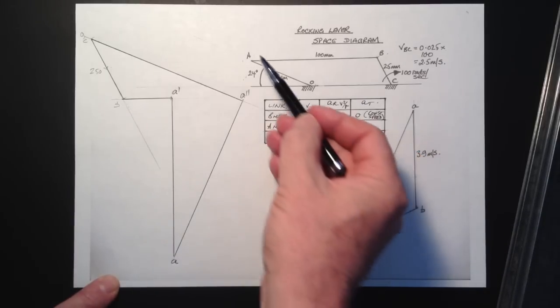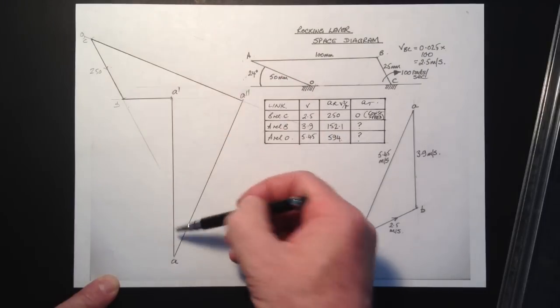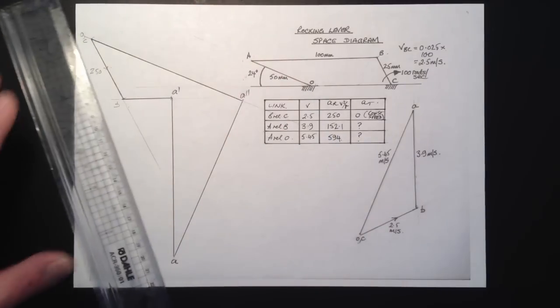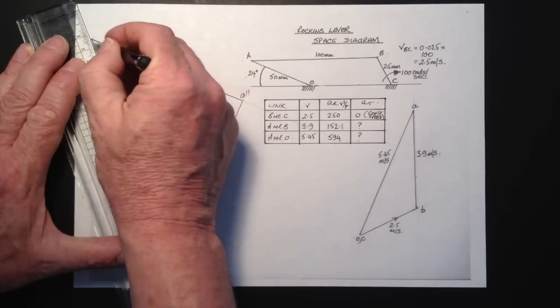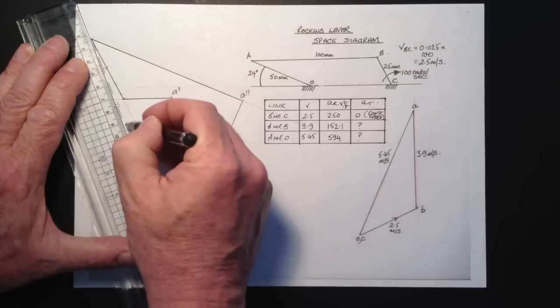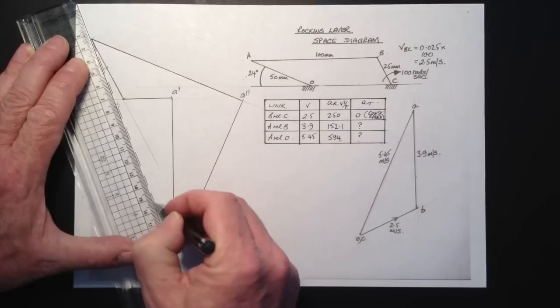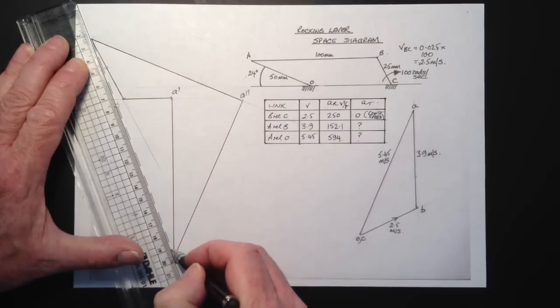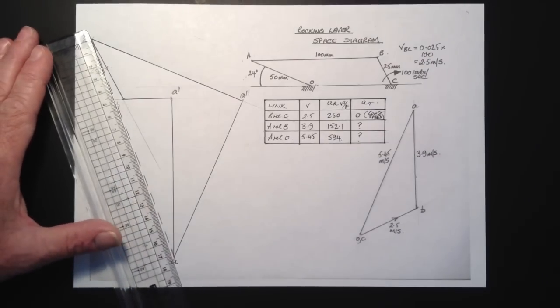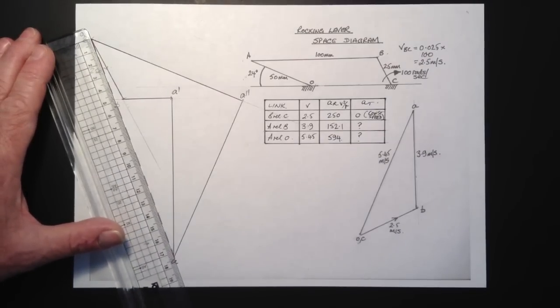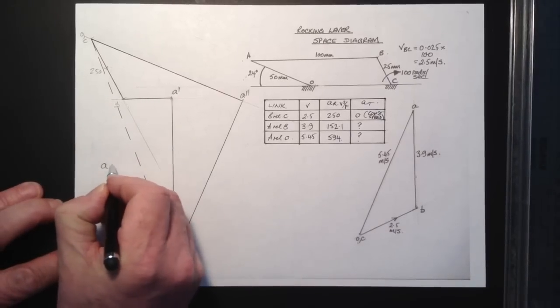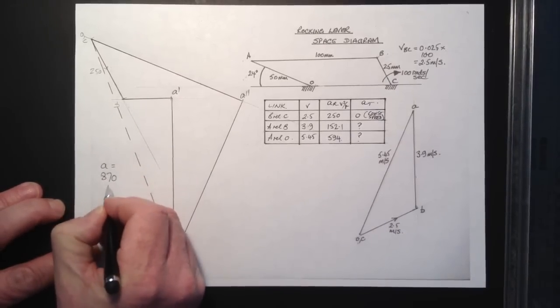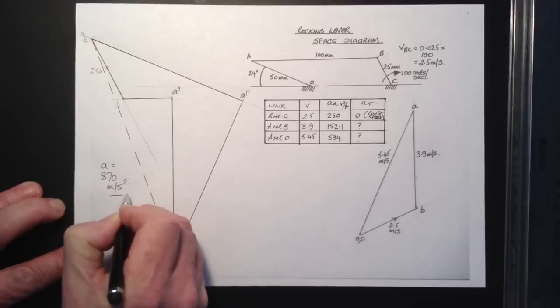OK, so now we have point A. So now what we can do is get the absolute acceleration of A relative to its centre O. And to do that, we join O down to A. That gives us the direction of that acceleration. Remember, it's instantaneous. It will change as it rotates. And we can measure it and scale straight off to get a value. So there we go. We have a value for the acceleration of A of 870 meters per second squared.